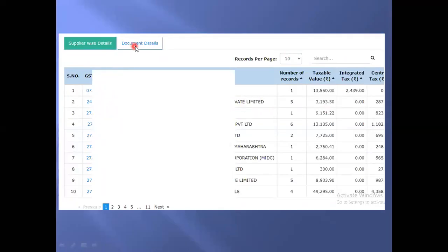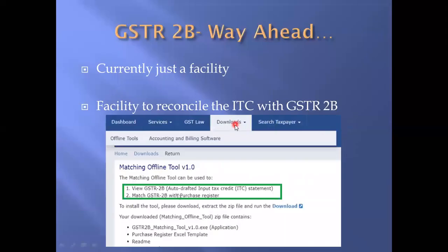Supplier-wise details are available as well as invoice or document-wise details. In the supplier-wise view, the supplier's GST number, name, and number of invoice records appear. Once you click on a respective supplier, the related invoices are also shown. For matching, an offline matching tool facility is also provided. Under downloads, there is a matching offline tool version 1 which you can download. Using the Excel utility, you can put your input tax credit purchase register data and match it with the GSTR2B auto-populated data using that tool — similar to earlier tools. There is currently no compulsion to use this, but going forward there would be. So I suggest getting familiar with all these functions as early as possible.